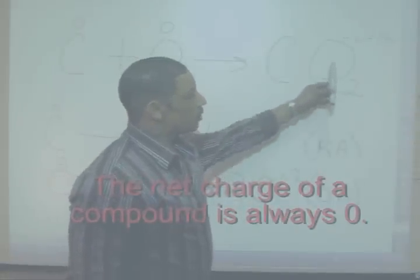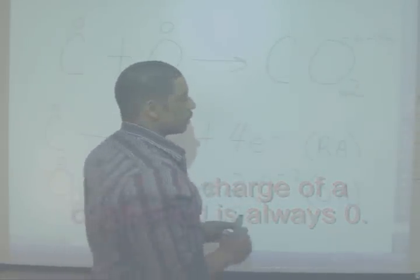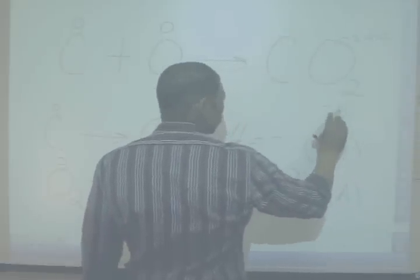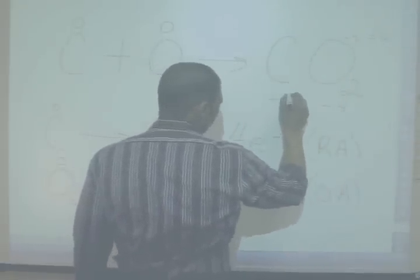If I have two oxygen atoms, each with a minus two oxidation number, that's a total of minus four. So in order to reach a net charge of zero, carbon must be a plus four.